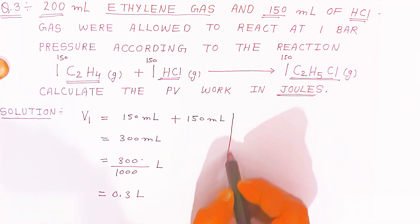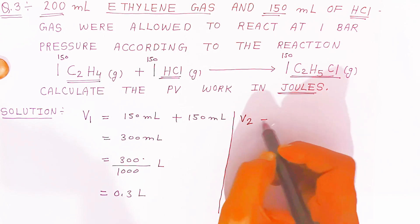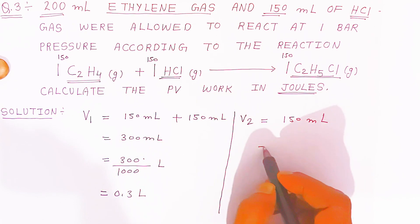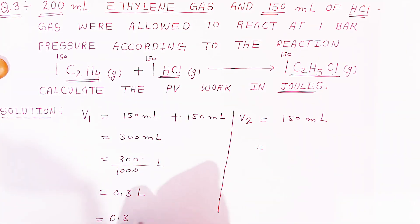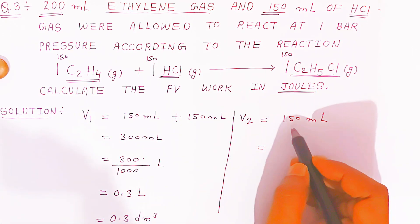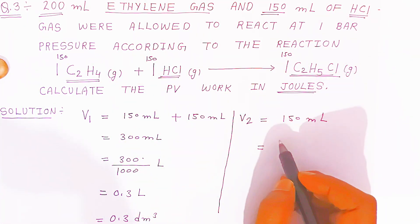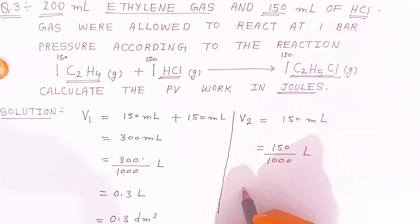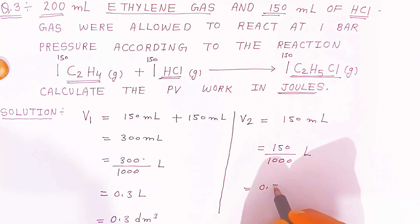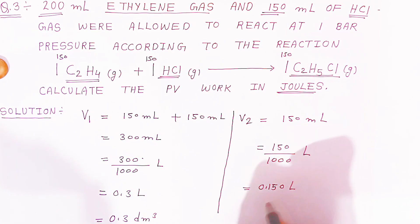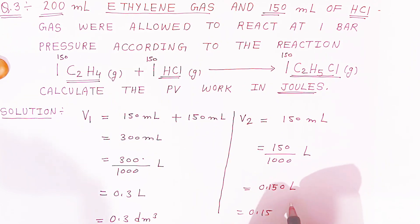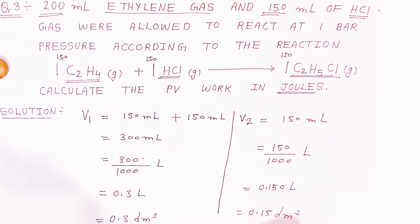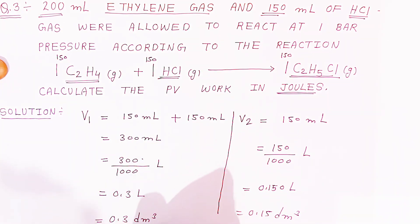Similarly, the final volume V2 is 150 ml. You also have to convert this to liters. This can also be written as 0.3 dm³. For V2, divide 150 by 1000 to convert into liters — put the decimal before three digits — giving 0.150 liters, which is 0.15 liters, or 0.15 dm³.